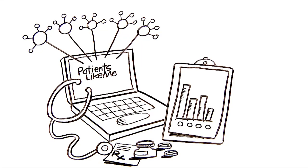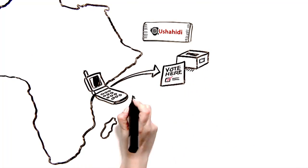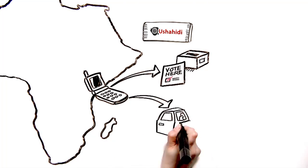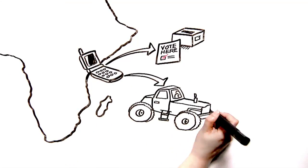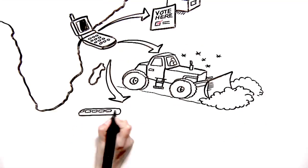In Kenya, Ushahidi, a text messaging platform created to document election violence, has grown from helping emergency response teams in Haiti during the earthquake to helping emergency snow removal in Washington and even the BBC during the tube strike in London.